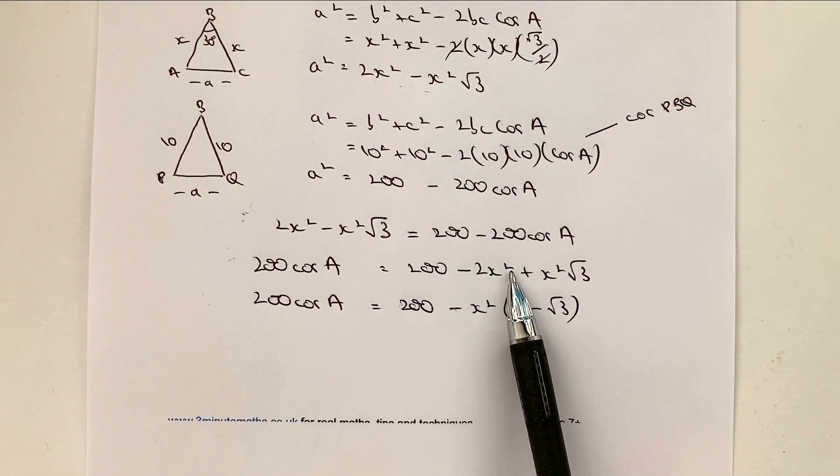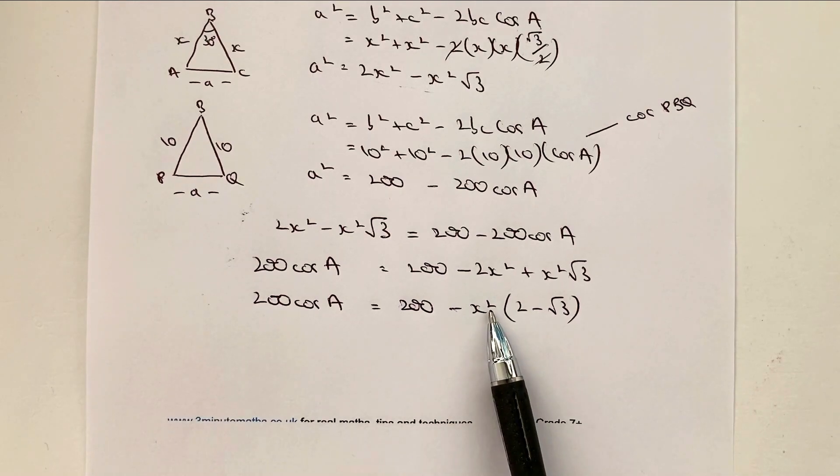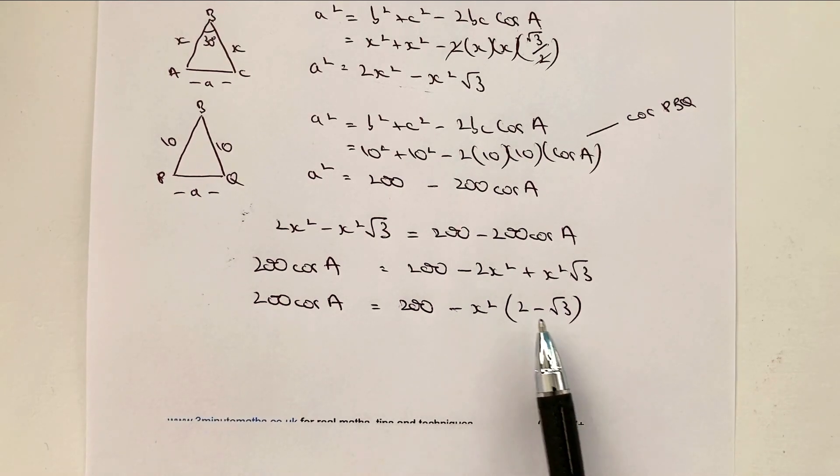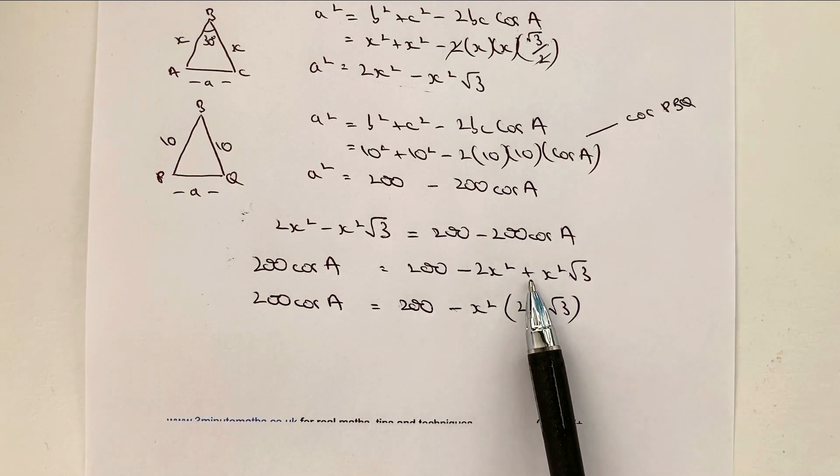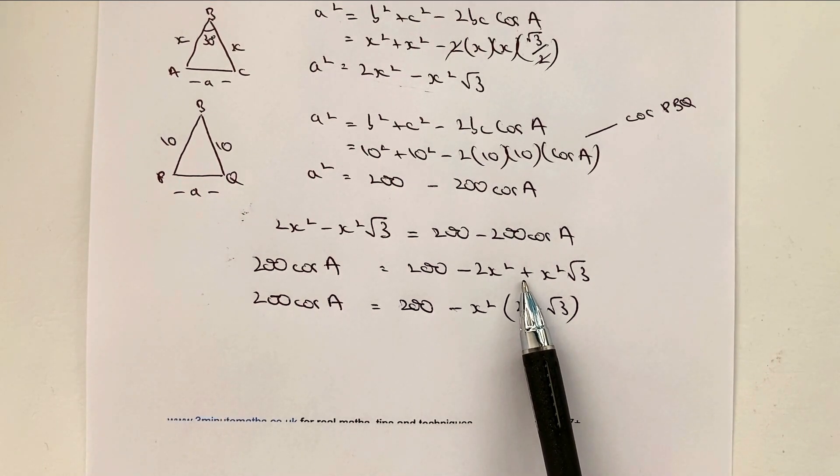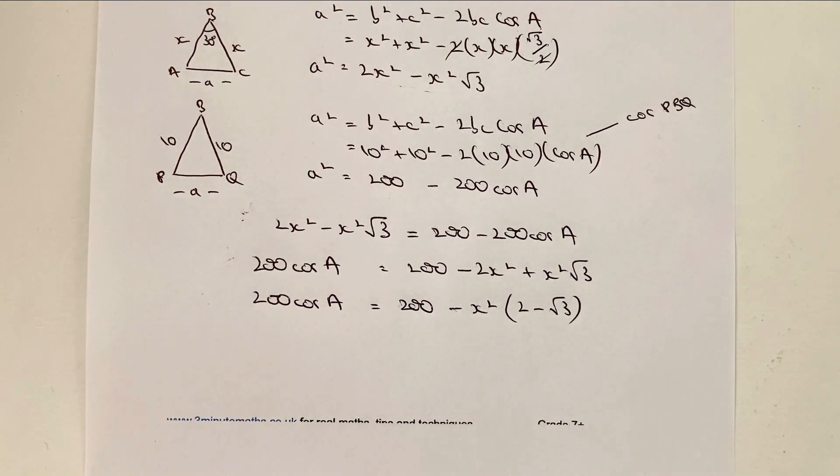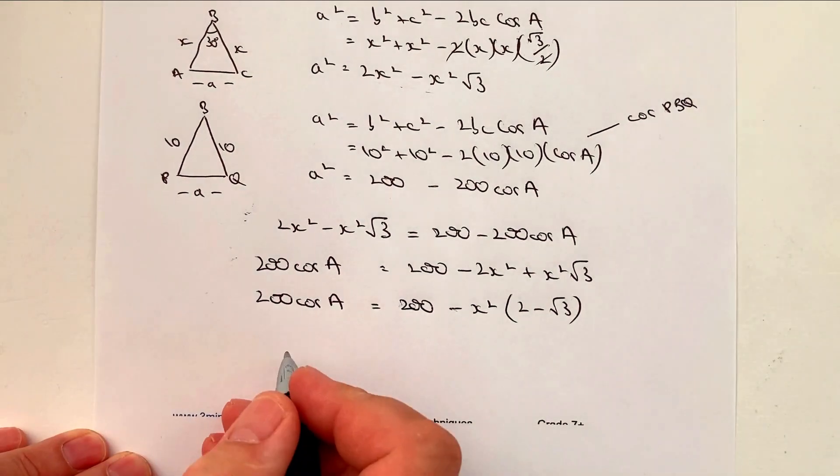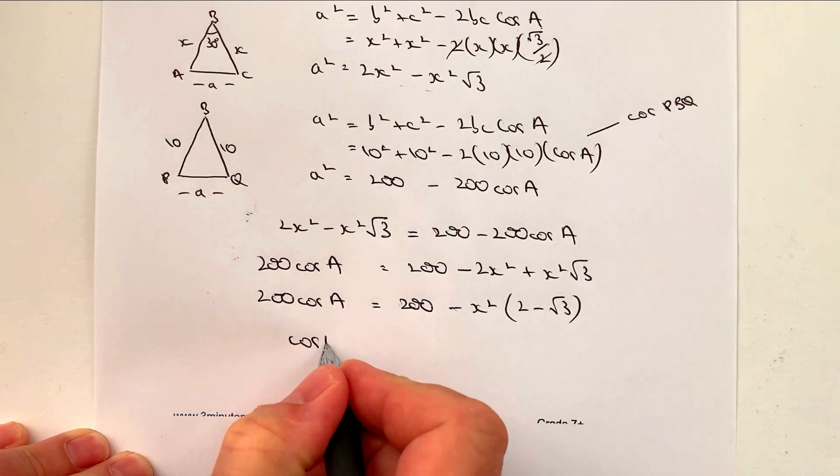And if I take minus x squared and multiply it by minus root 3, I've got a minus times a minus is a plus. So that becomes plus x squared root 3. All right, so we are getting a little bit closer. And now it's just a case of dividing through by 200.